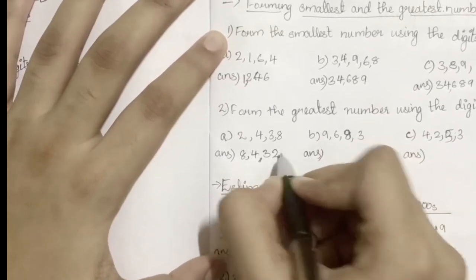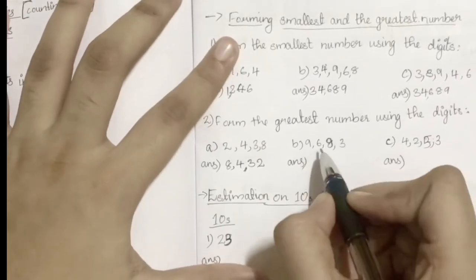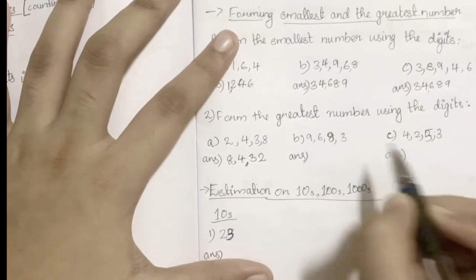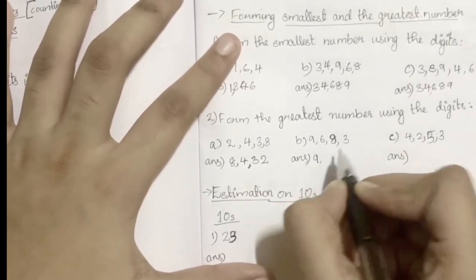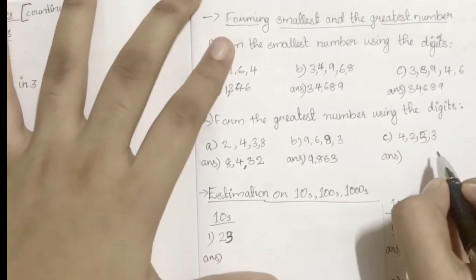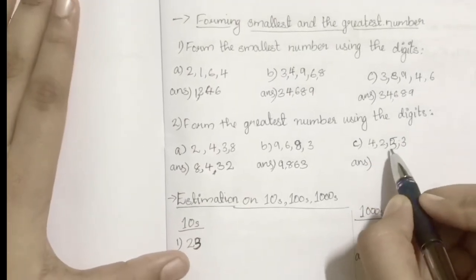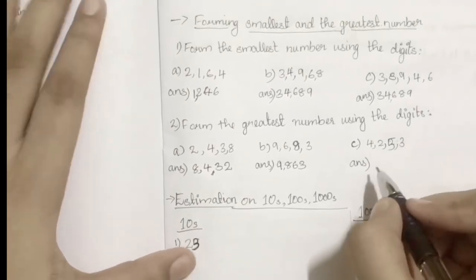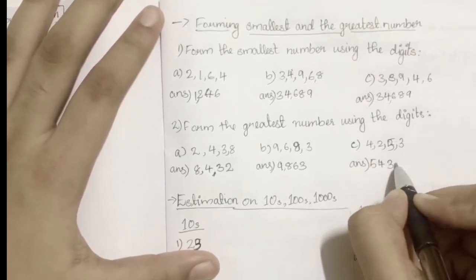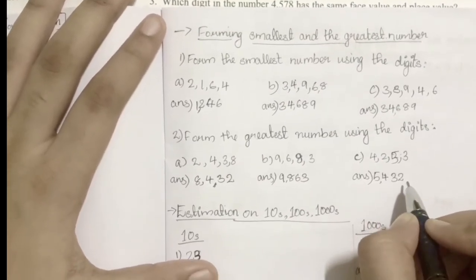The next four digits are 9, 6, 8, 3, which arranged gives 9863. And the next digits are 4, 2, 5, 3, so it is 5, 4, 3, 2, which is 5432.